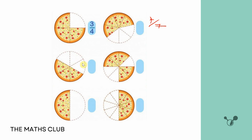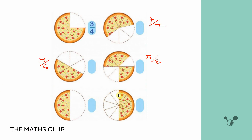Here's one divided into six — somebody has taken three out of six, so three remain. Another has eight parts, somebody has taken three, so five out of eight remain. And here with ten parts, five have been taken, so five out of ten remain. For a full circle divided into two, your parents have eaten one, so only one piece out of two remains to share. That's the idea behind fractions.